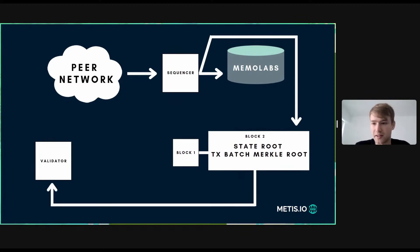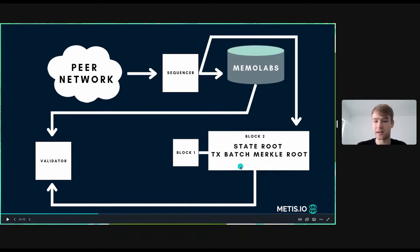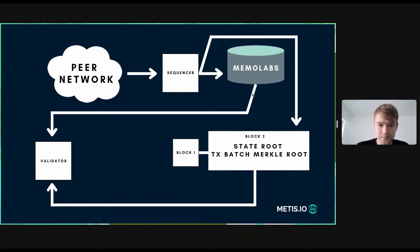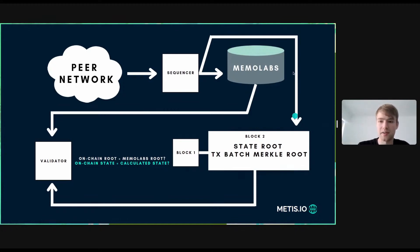Afterwards, a validator comes into the system. They download the transaction batch Merkle root as well as the state root, and they attempt to find the transaction batch Merkle root from MemoLabs storage. Then they do two comparisons: does the on-chain root match the MemoLabs root? If it does, then they check the state — does the state match the calculated state after executing all of the transactions from MemoLabs storage?